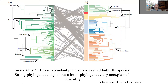When we look at community-level phylogenies — this is the Swiss Alps temperate zone ecosystem, with all butterfly species feeding on 231 most abundant plant species — we see the phylogeny of the plants and butterflies and their trophic interactions. There is a very strong phylogenetic signal, for instance a lineage of nymphalids feeding on monocots, and Brassicaceae with Pieris and so on. But at the same time, there can be a lot of unexplained variability at the species level.